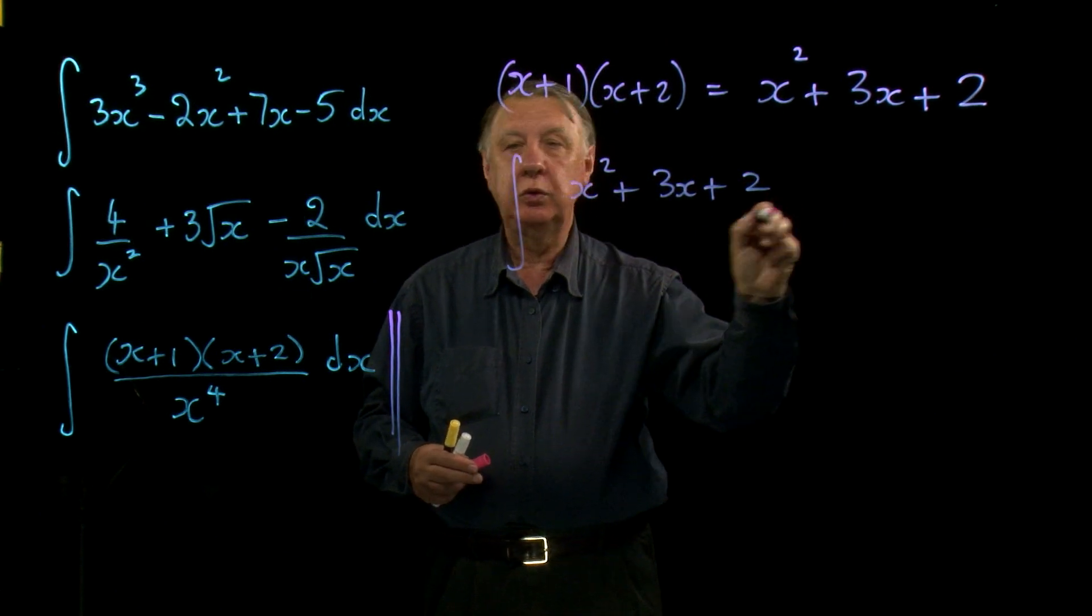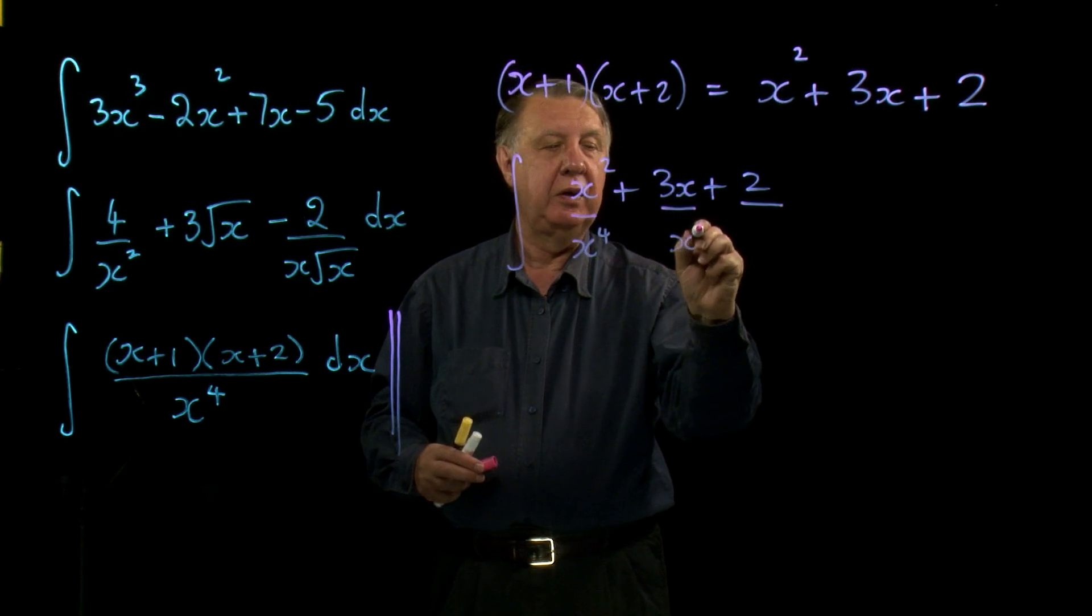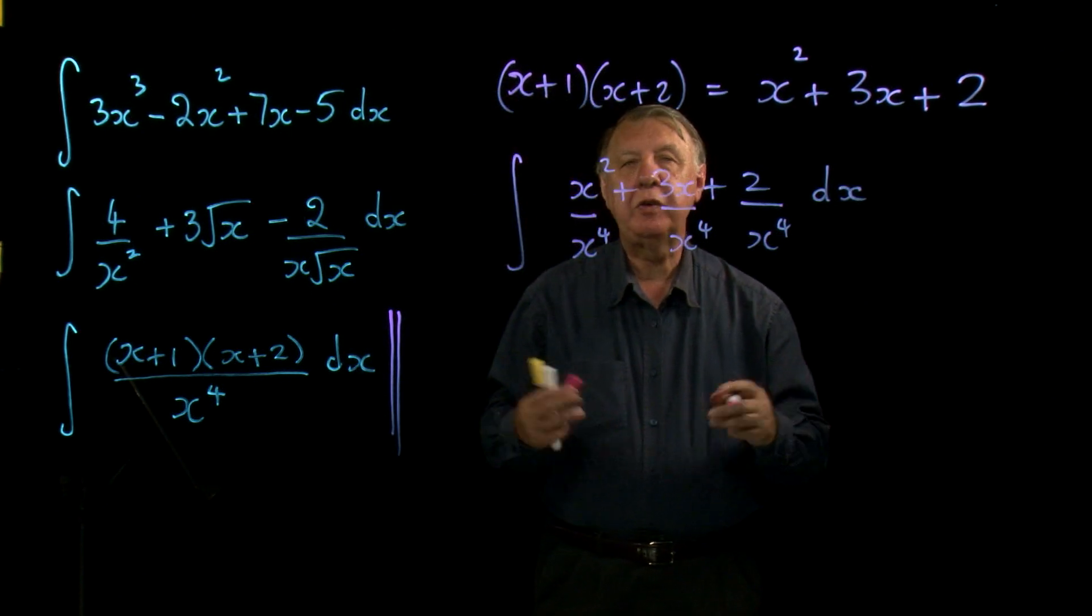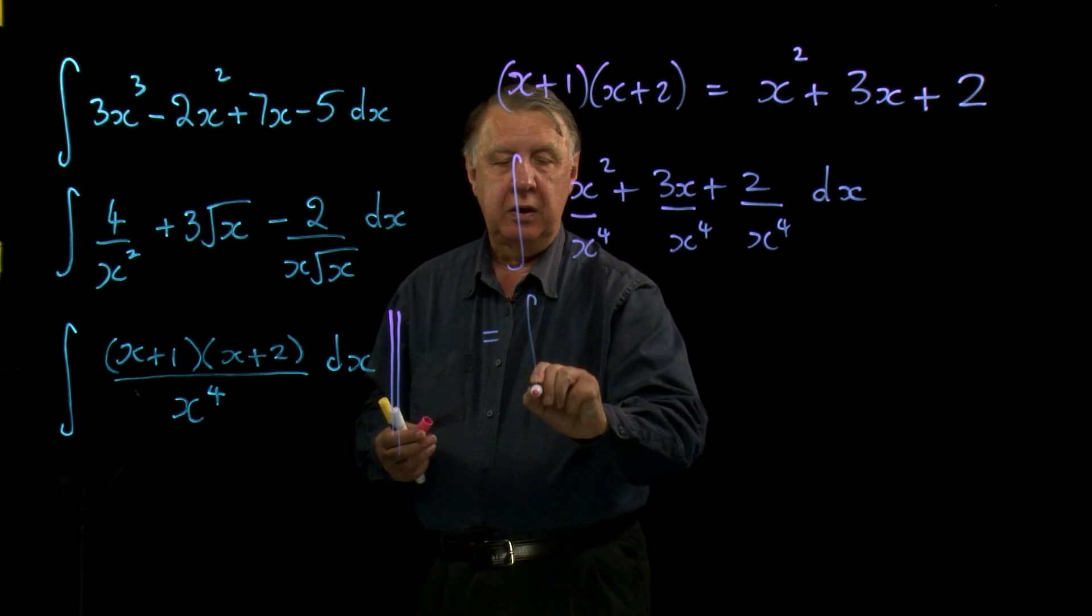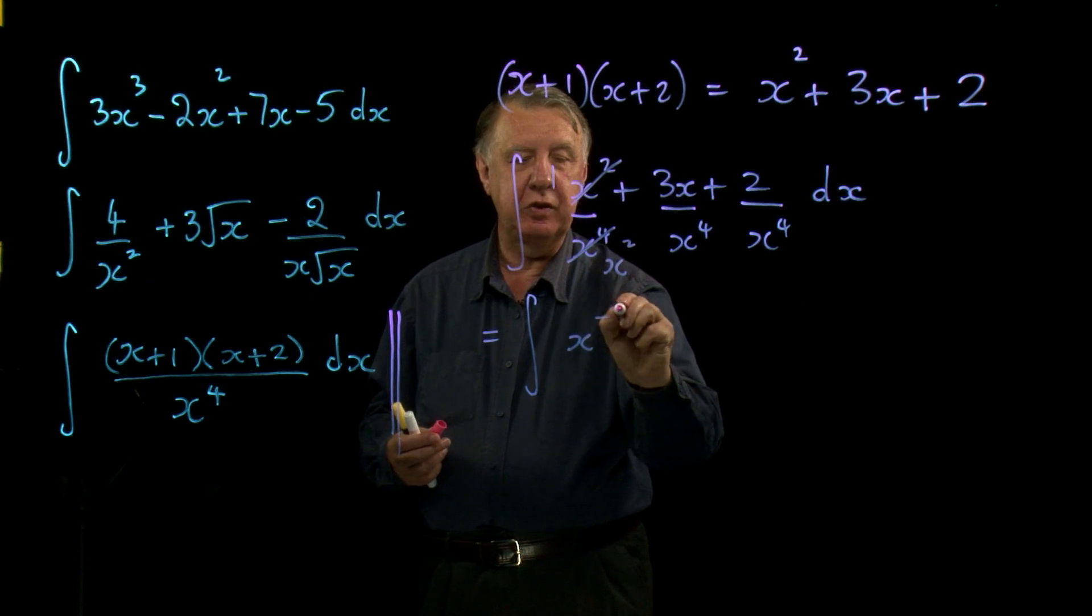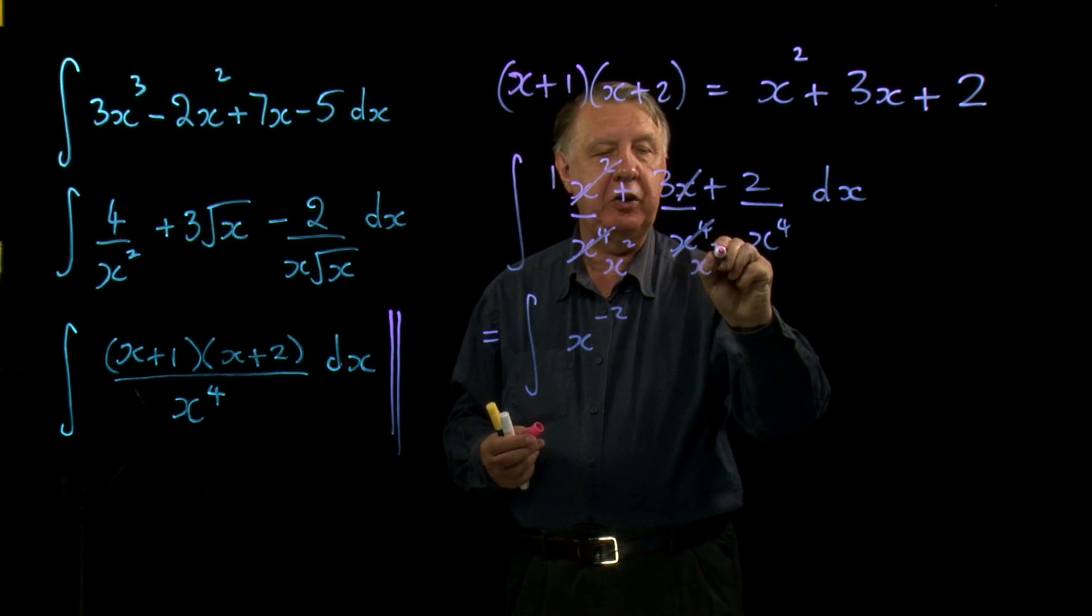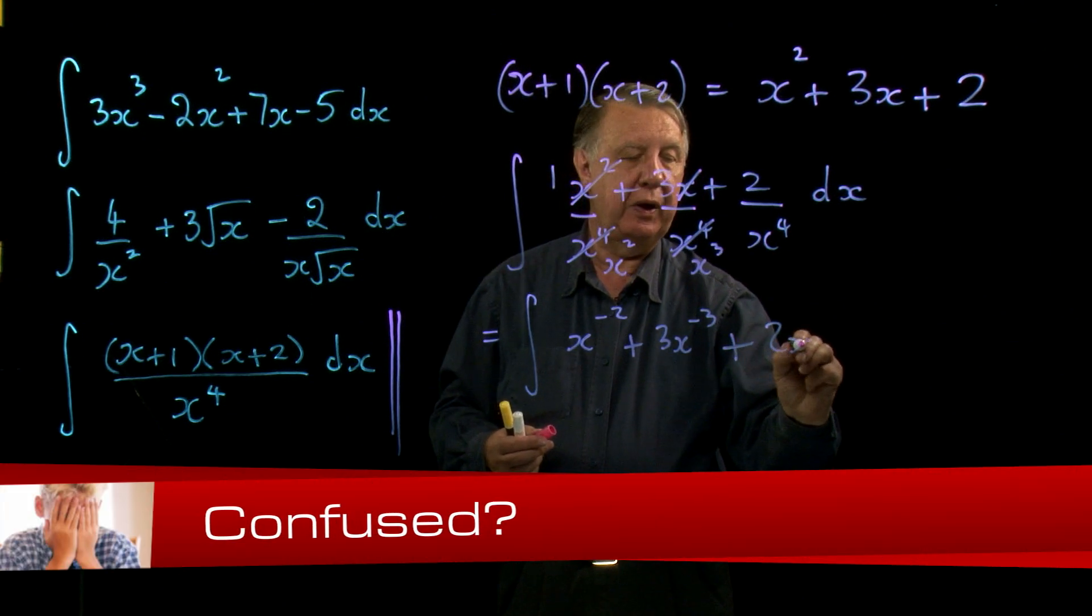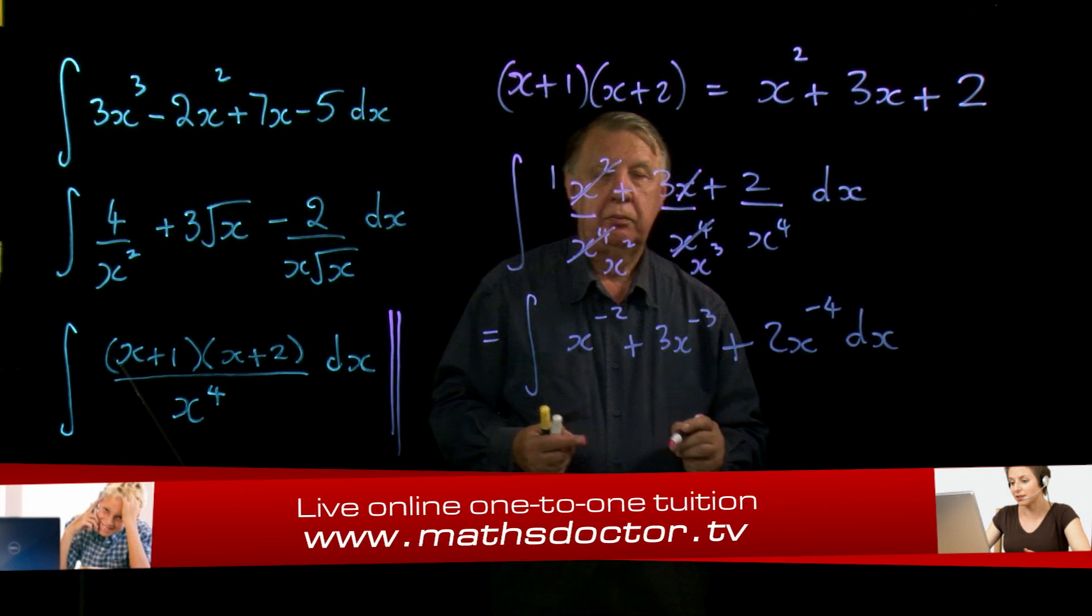So that means then the integral is actually x squared plus 3x plus 2. Now, although it's all over x to the 4, I'm going to put each part separately over x to the 4. If I do that, you can see now, perhaps fairly quickly, I can do something about this, can't I? Because this is x squared over x to the 4 will cancel to 1 over x squared. So that's x to the negative 2. I can cancel an x here to give me x cubed. So that's 3x to the minus 3. And finally, 2x to the minus 4.